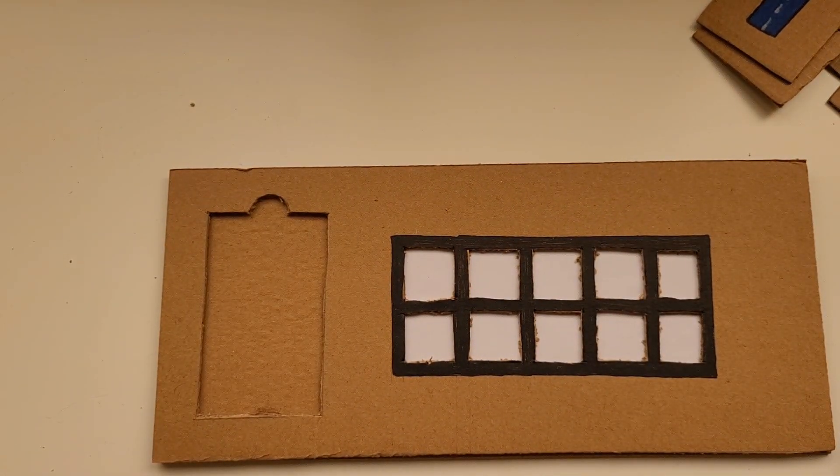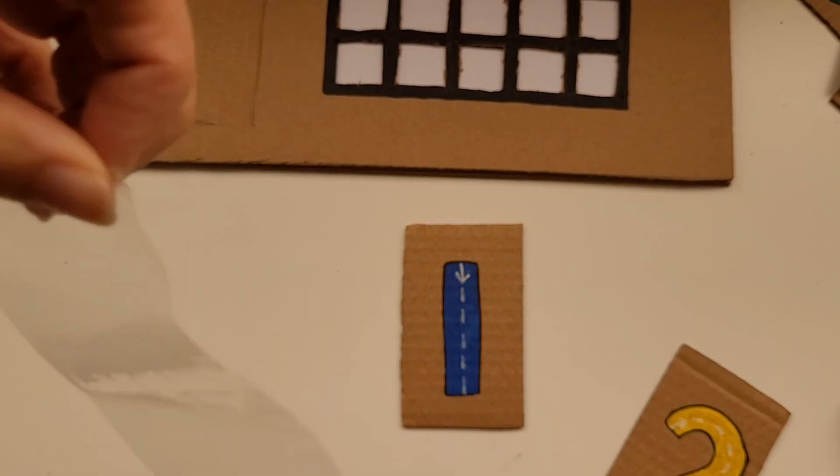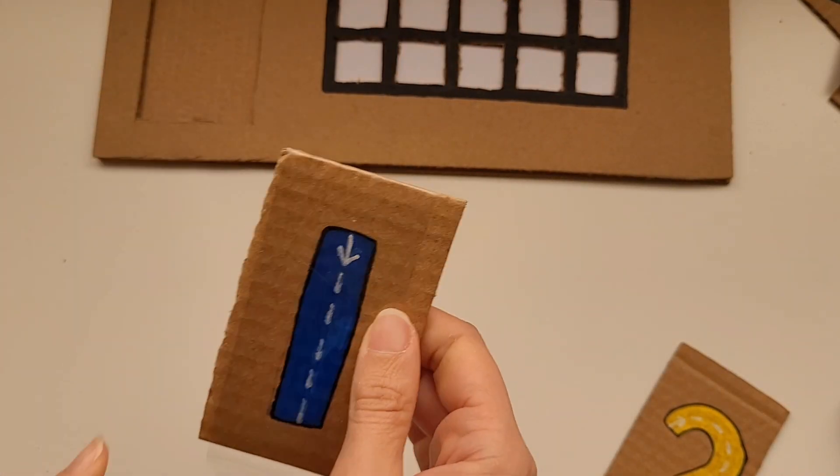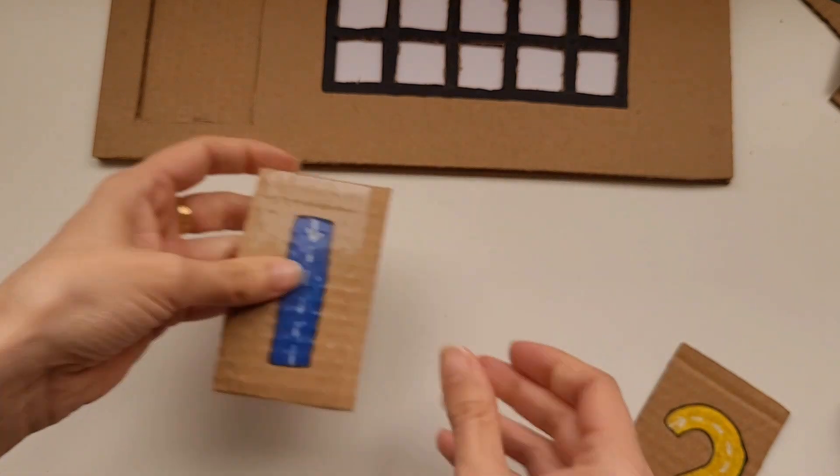Now that this part is done, we are going to work on covering the numbers. We're going to take each of the cardboards that we wrote the numbers on and cover it with a piece of white tape.